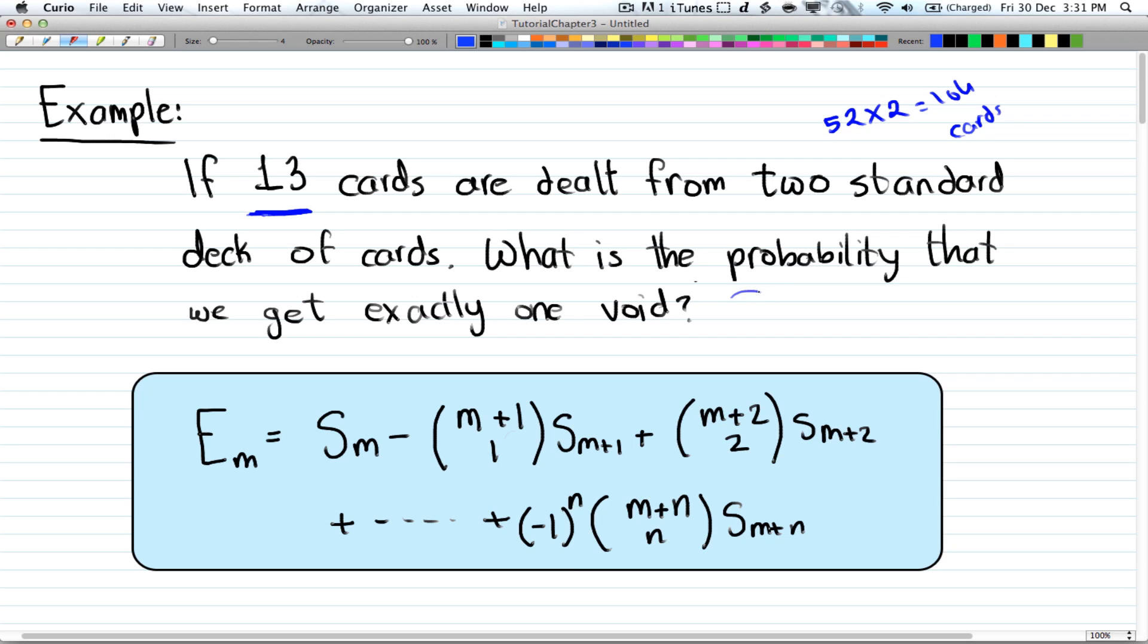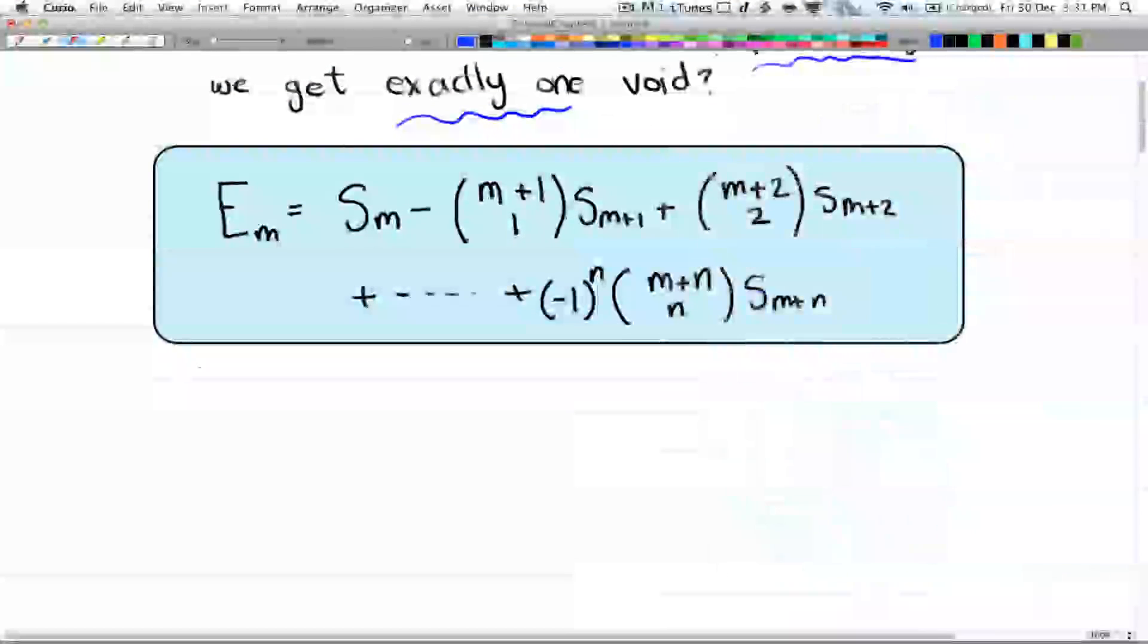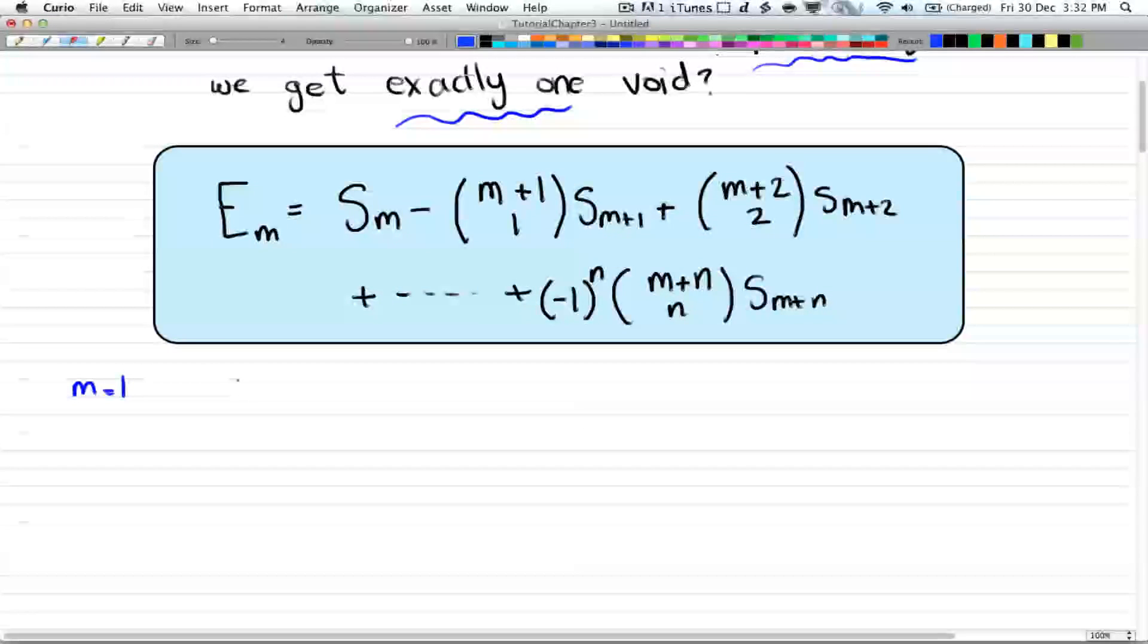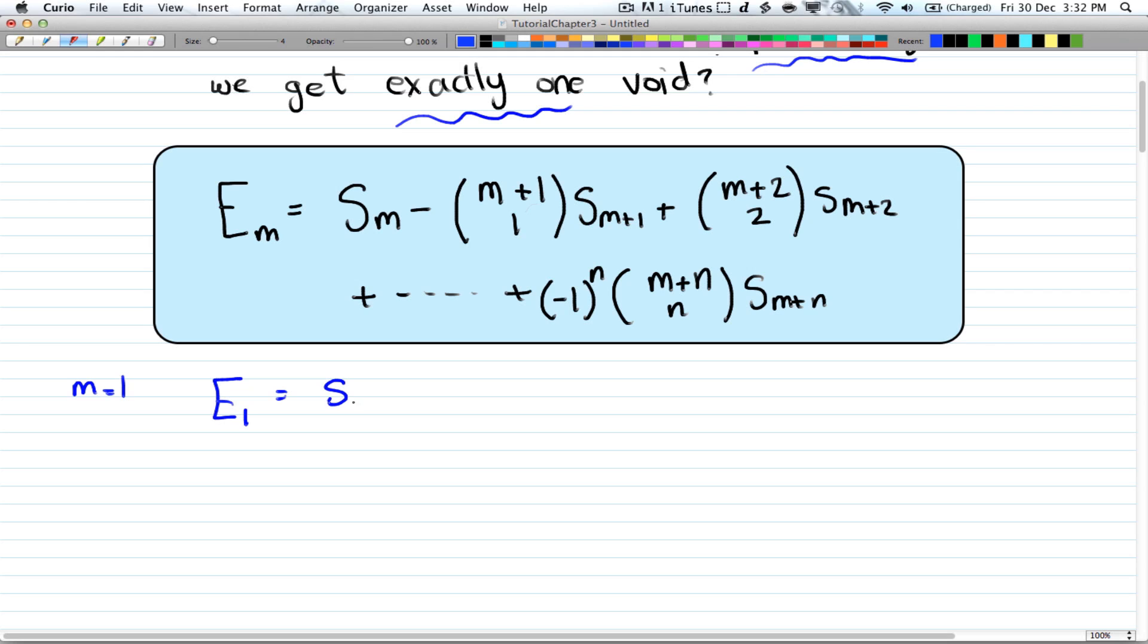And this question is asking for the probability that we get exactly 1 void. So m is 1. So e of 1 equals s of 1 minus 2 choose 1 of s_2 plus 3 choose 2 of s_3 minus 4 choose 3 of s_4. Since we have 4 suits, that's it.